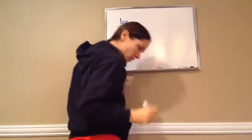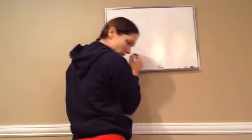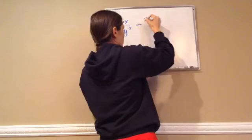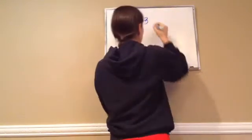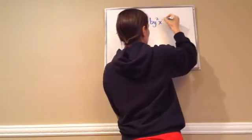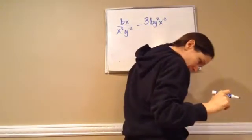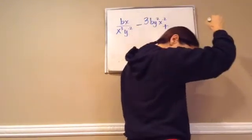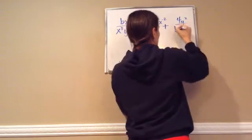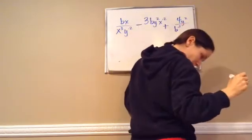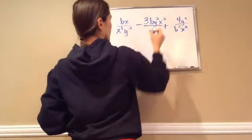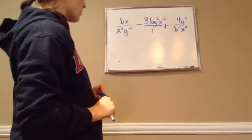I'm going to teach you how to simplify those kind of equations that we've worked with. And you're going to be using like terms. For example, let's do this problem. bx over x to the third power y to the negative two power minus three b y squared x negative two squared, and then plus four y squared b to the negative one.